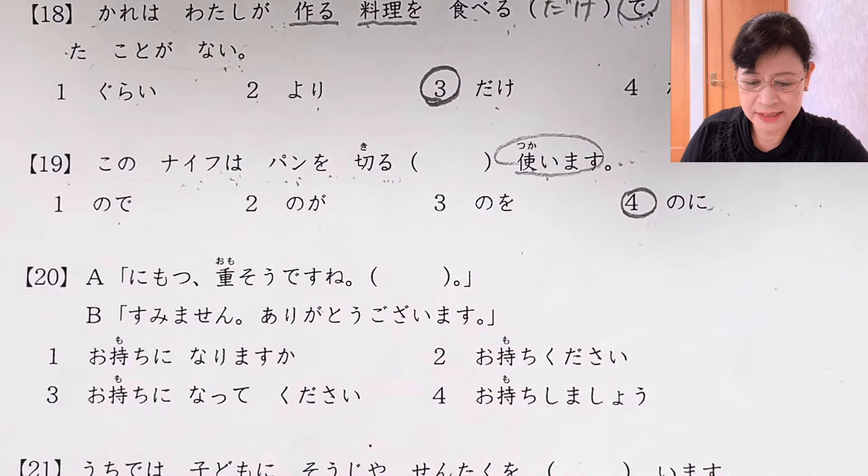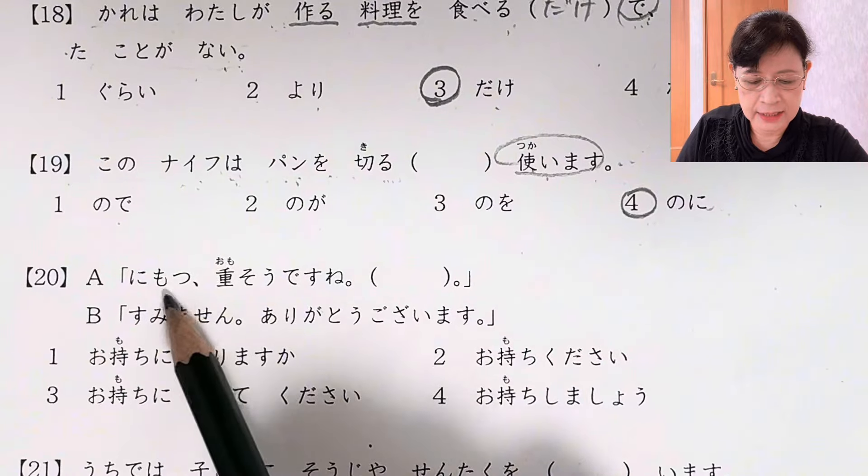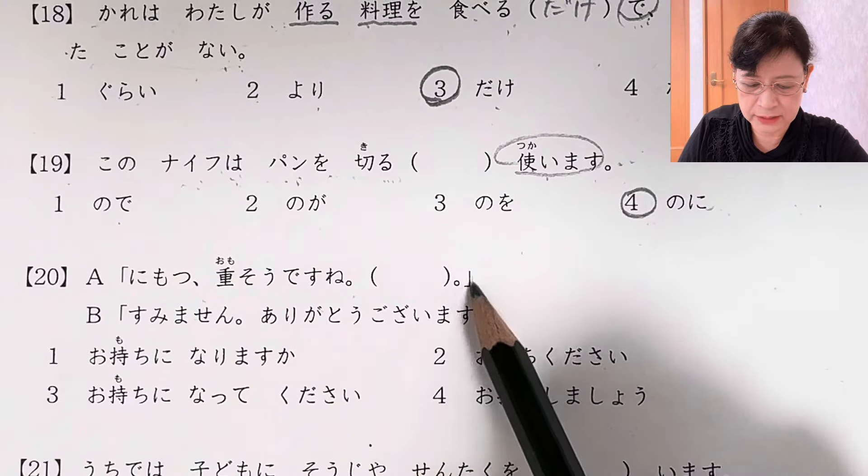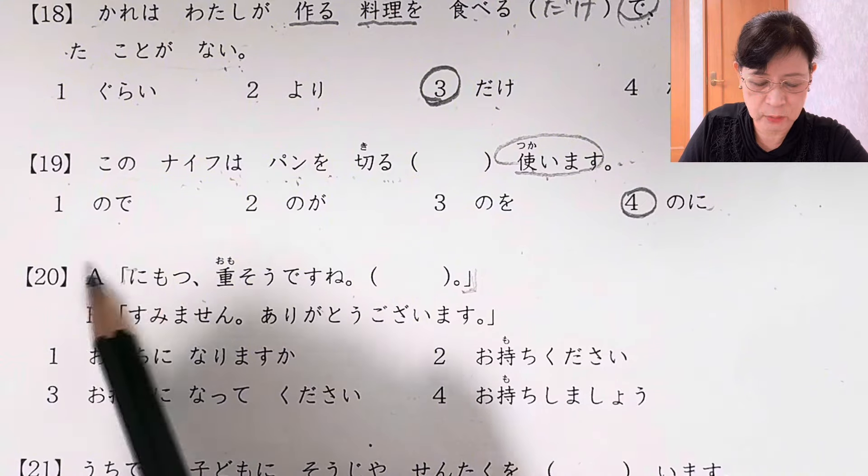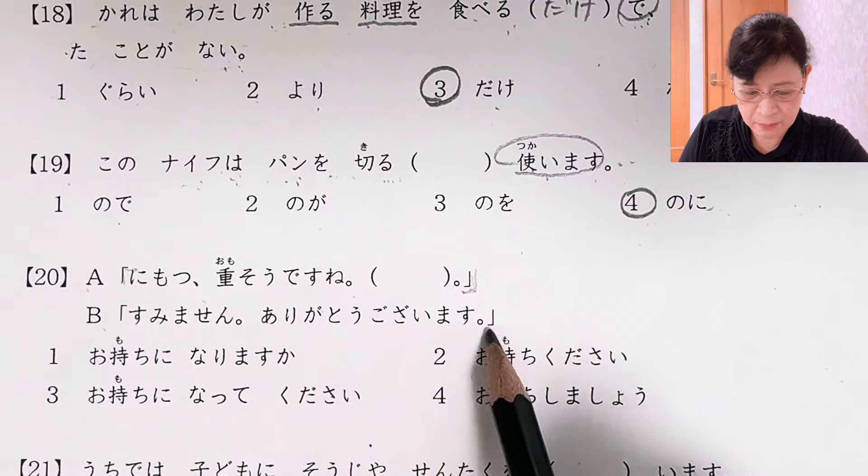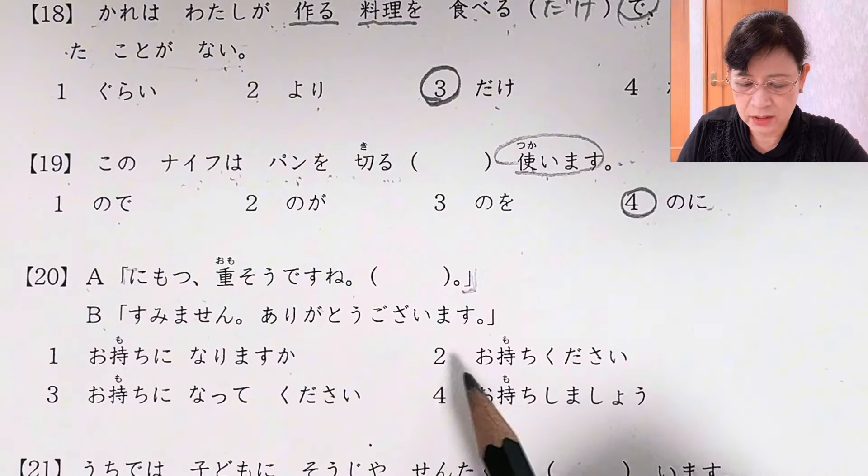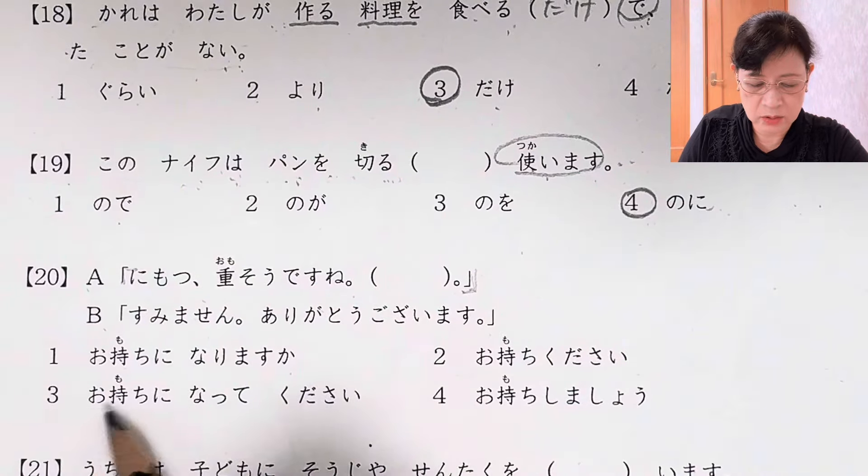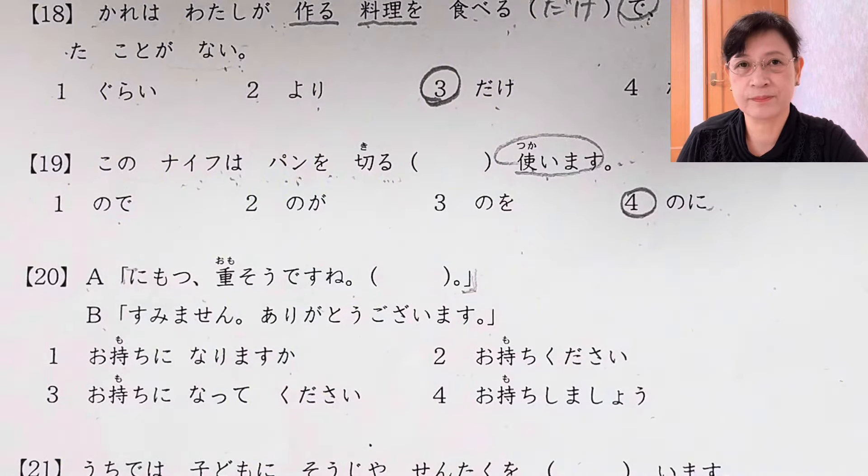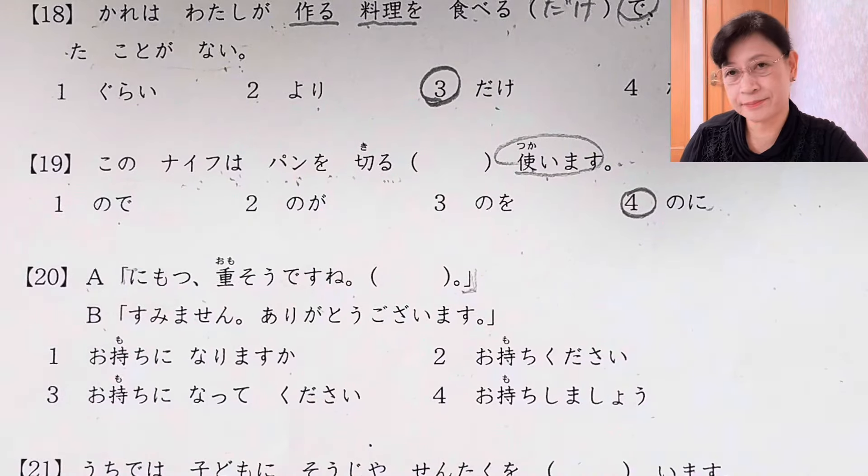Number 20. We have a dialogue: A says 荷物重そうですね、お持ちかっこ. B says すみません、ありがとうございます. Choices are お持ちになりますか、お持ちください、お持ちになってください、お持ちしましょう.